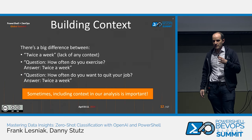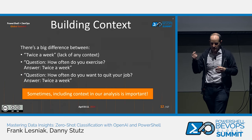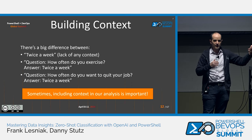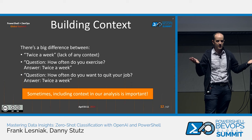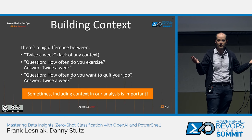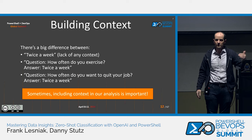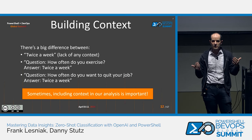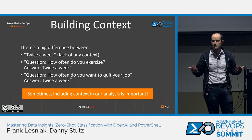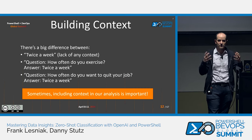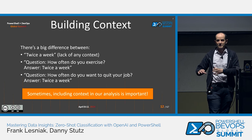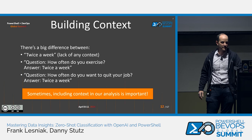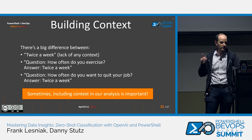Going back to context for a second — this is really important. There's a pretty big difference between the same response without any context and with different context added. Just saying 'twice a week' without any context — who knows what that means. Versus 'how often do you exercise? Twice a week' — that's a middling, probably pretty good response. Versus 'how often do you want to quit your job? Twice a week' — that's really bad. Context can be very important, but there are some gotchas to that too, which we'll talk about later.